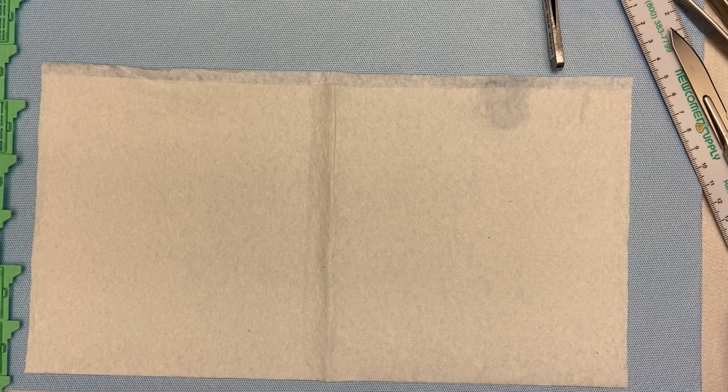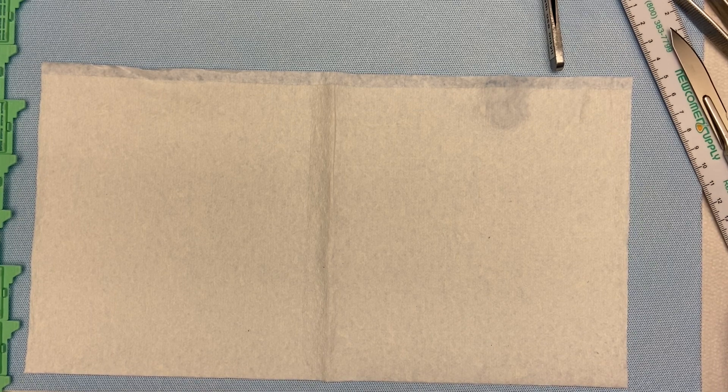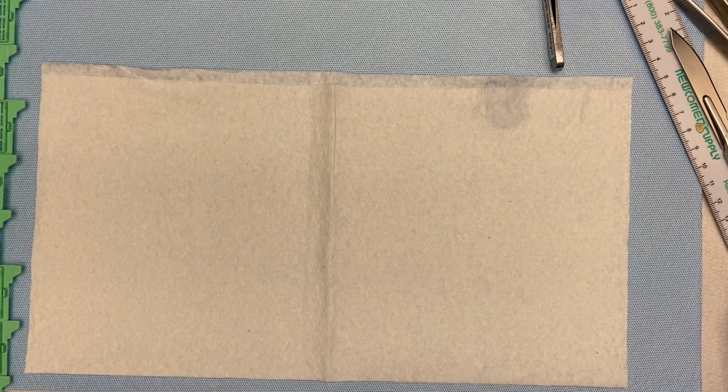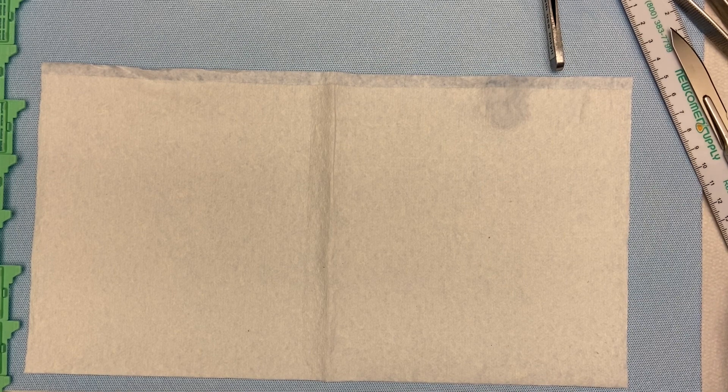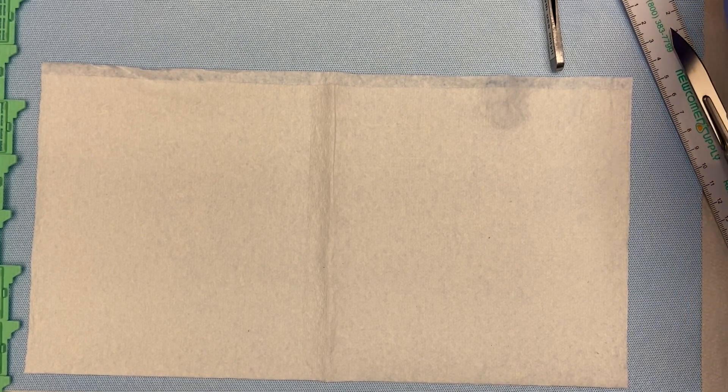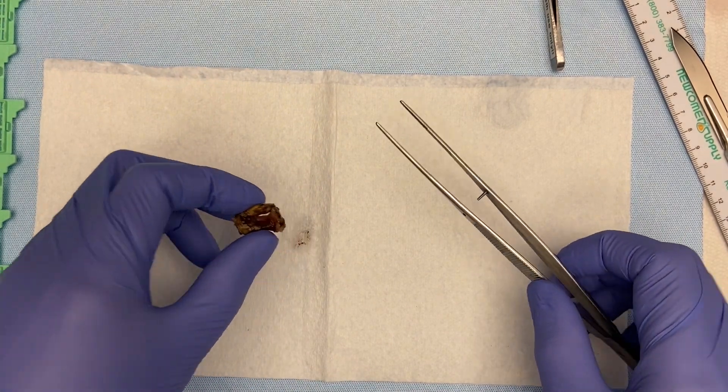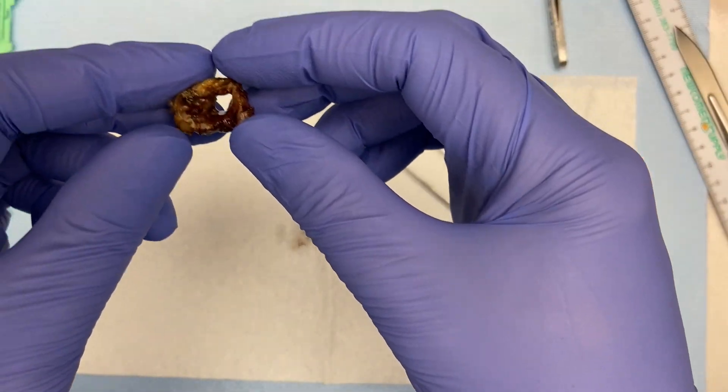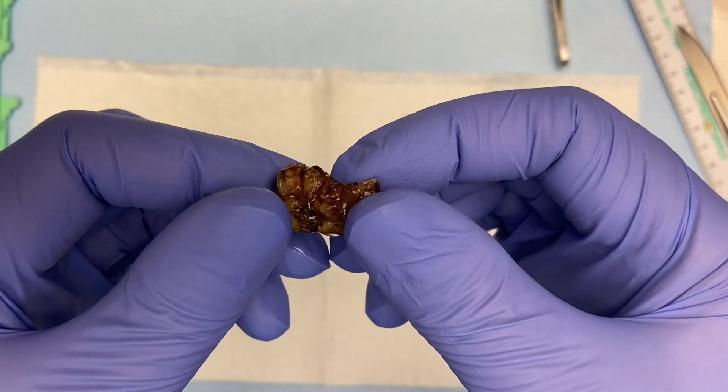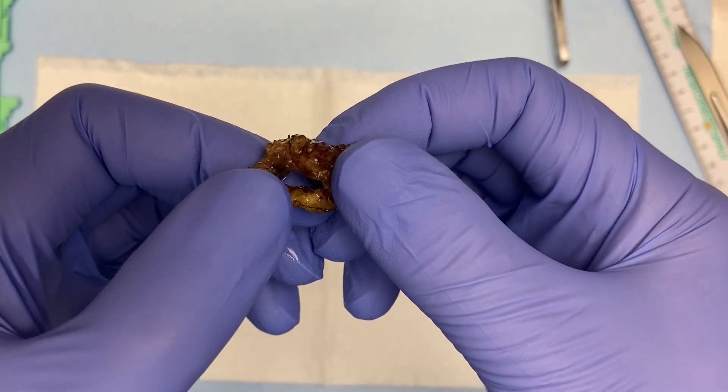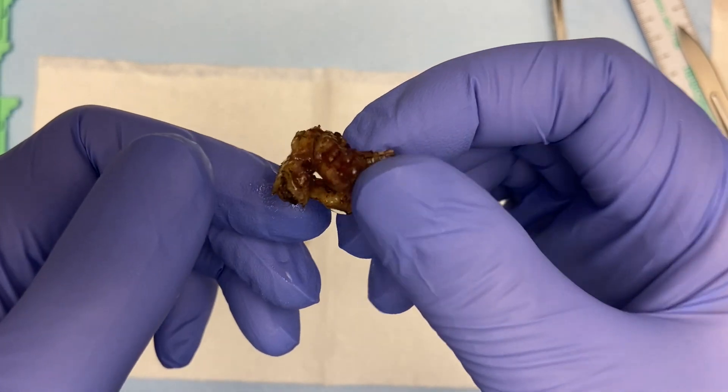This particular case has carcinoma in situ, grade 2, and this one is unoriented. So this is what I have right here. It's a tan pink to brown annular portion of soft tissue with a central patent lumen.